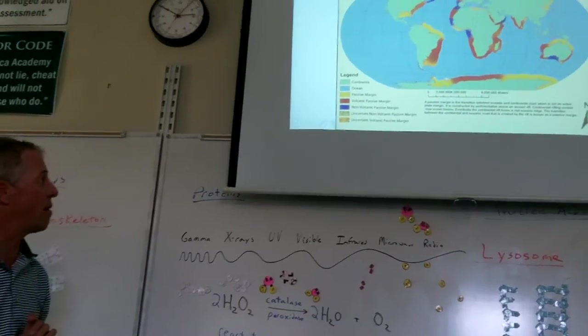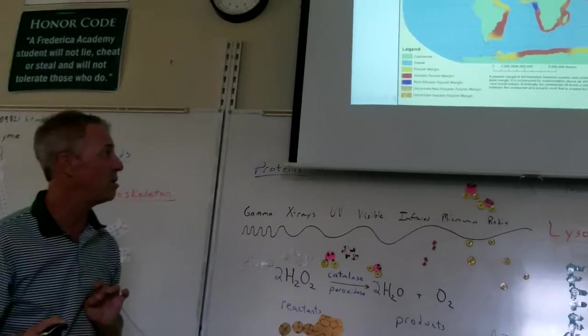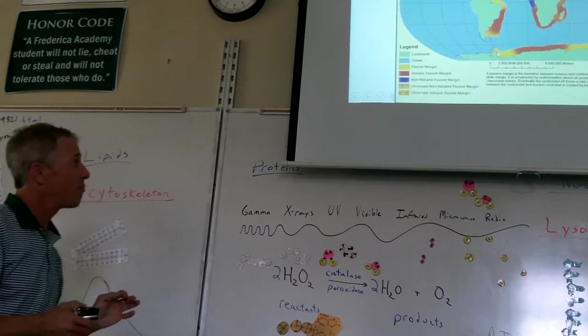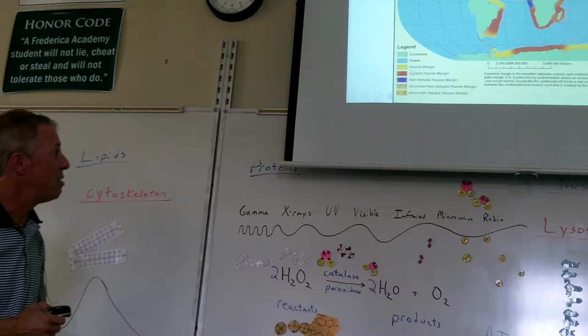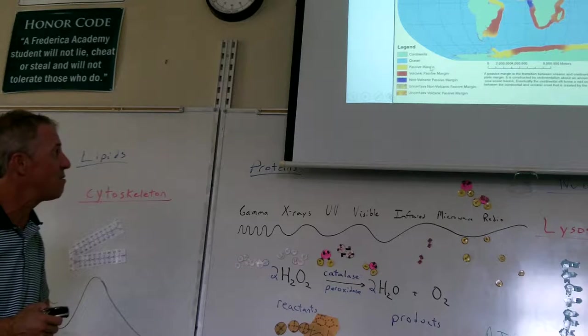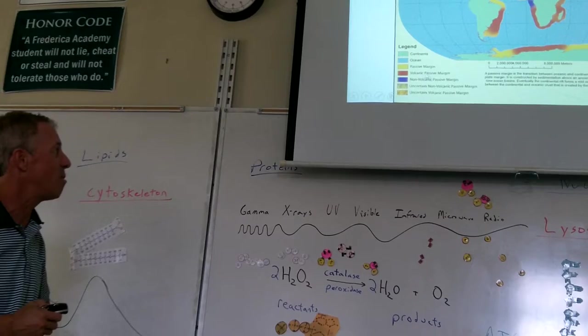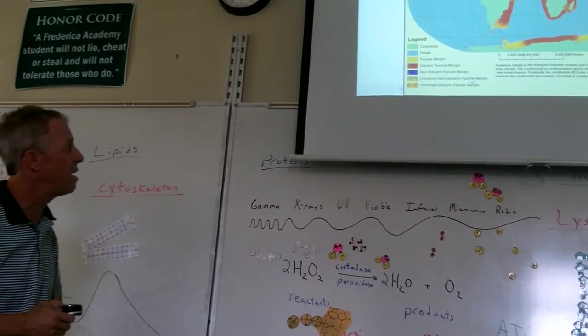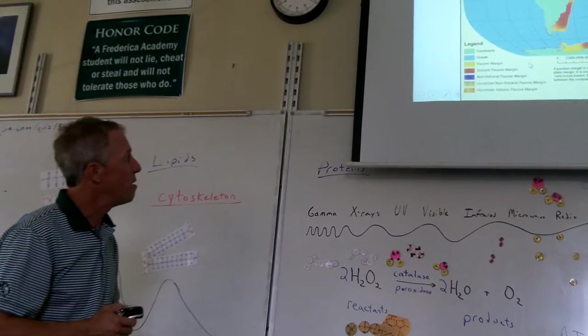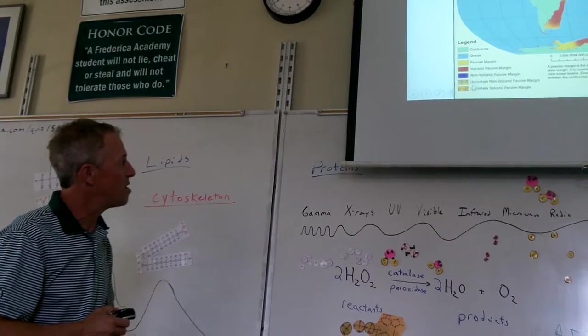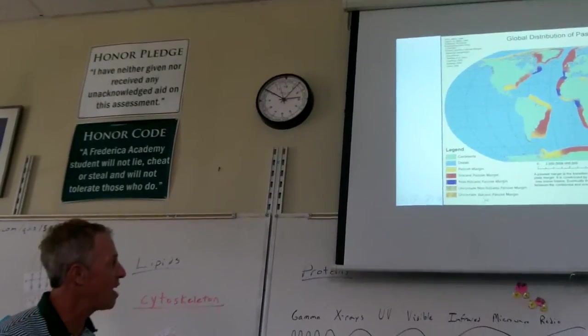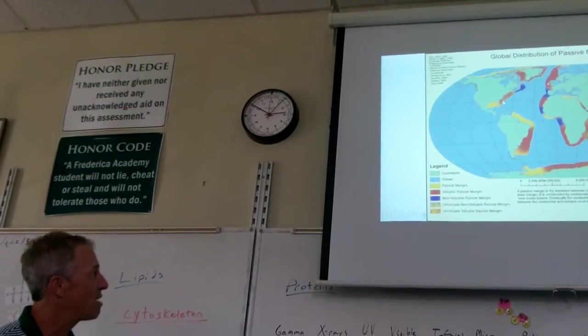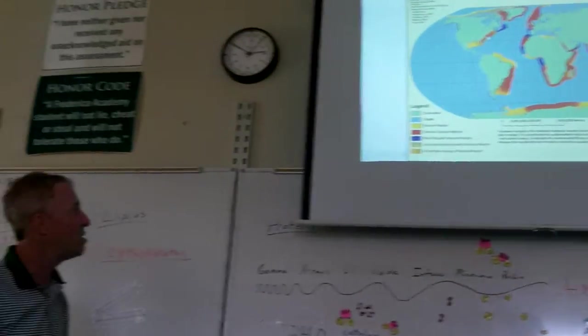This is just showing they have colored all the passive margins, and they classify passive margins in different ways. You can have it completely passive, sometimes it will be passive, but we'll have some volcanic activity. This one, where we are, it says uncertain volcanic passive margins. So we could have some volcanic activity here, but not much.